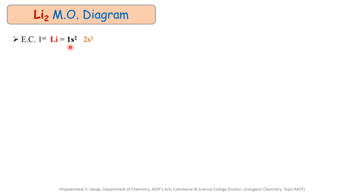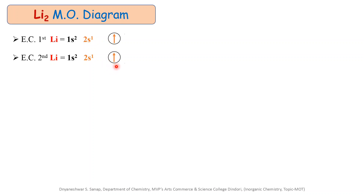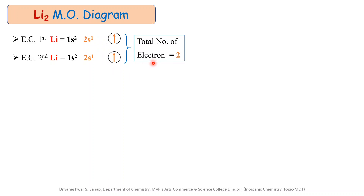There are two electrons present in the first shell of a lithium atom and one electron in the second shell. Similarly, the electronic configuration for the second lithium atom is 1s², 2s¹. There is only one electron present in the valence shell of a lithium atom, and finally, the total number of electrons which participated in the bonding is 2.